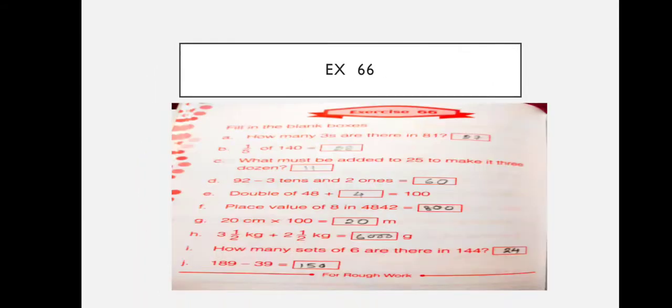Next: I am three tens and two ones — that means 32. So 92 minus 32 is equal to 60.